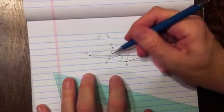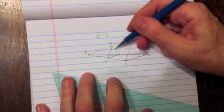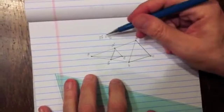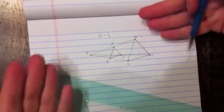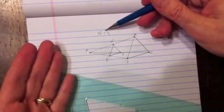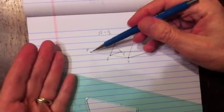And I'm done. So this is the new figure. And you'll notice that it's half the size of the original figure because the scale factor is one-half. That's how you draw a dilation of a figure with a scale factor and a center of dilation.